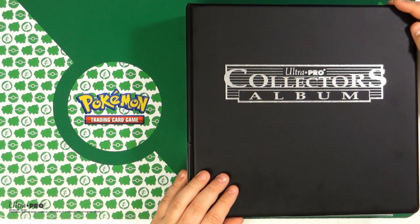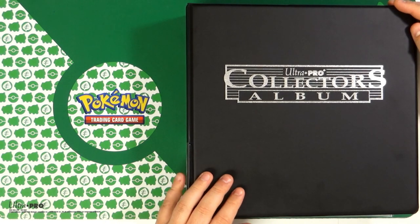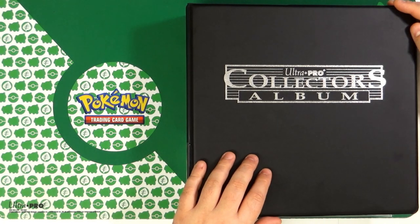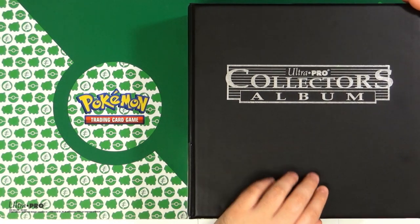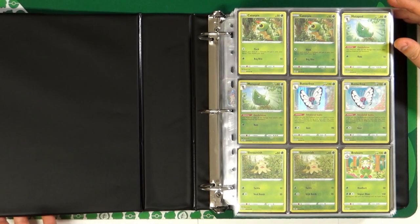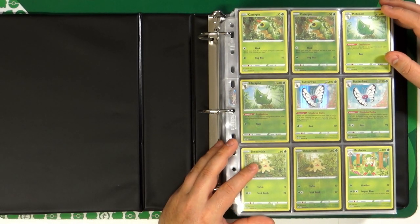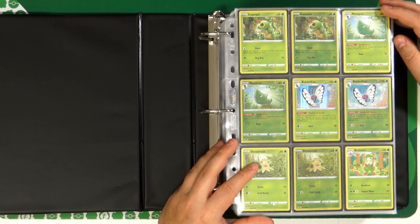The first thing that I want to say is that we had to use this type of binder, an Ultra Pro 3-ring binder, because it was the only option that was able to fit all the cards that are in Fusion Strike, which are more than 500.